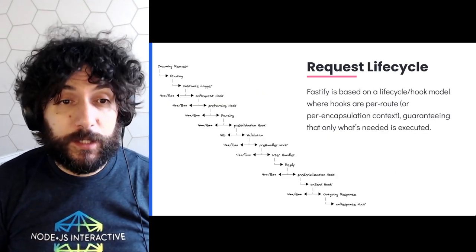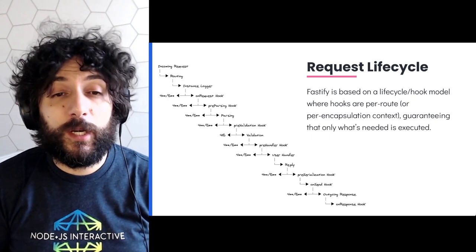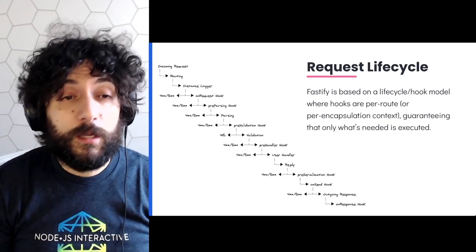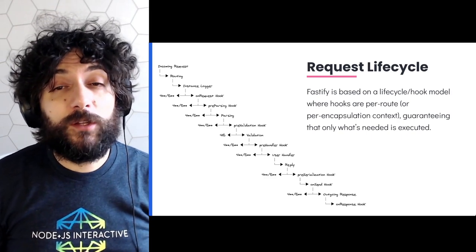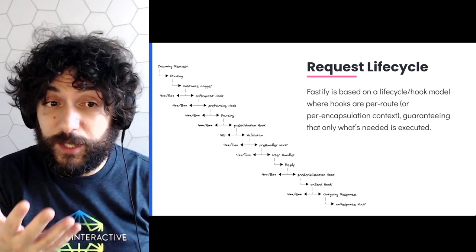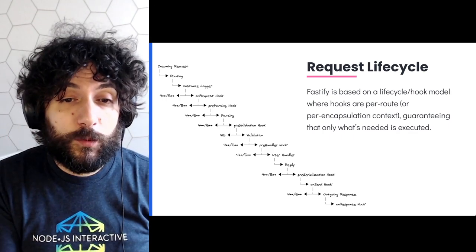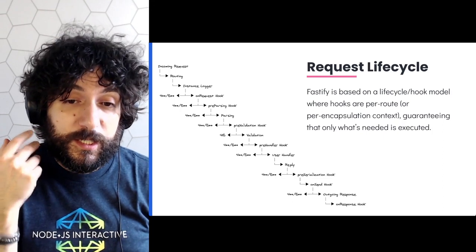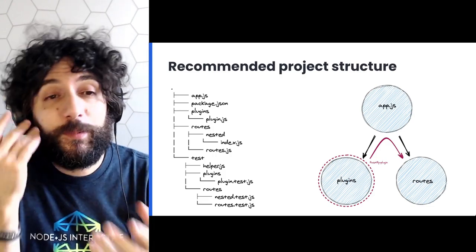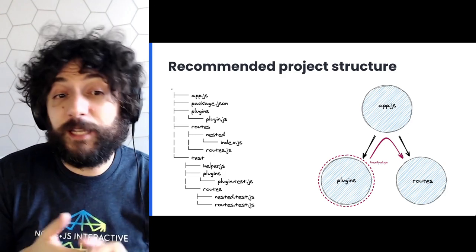The request lifecycle of Fastify is different from Express or Koa, where middlewares run everywhere. With Fastify, you have a predefined lifecycle to specify when things are run, which allows us to avoid monkey patching Node core. The most important hooks are onRequest (first to execute), preHandler (executed before the user handler), and onSend (executed before sending the response). Fastify also provides a recommended project structure: an app.js file, a plugins folder for reusable behavior, a routes folder with a nested pattern, and a test folder.